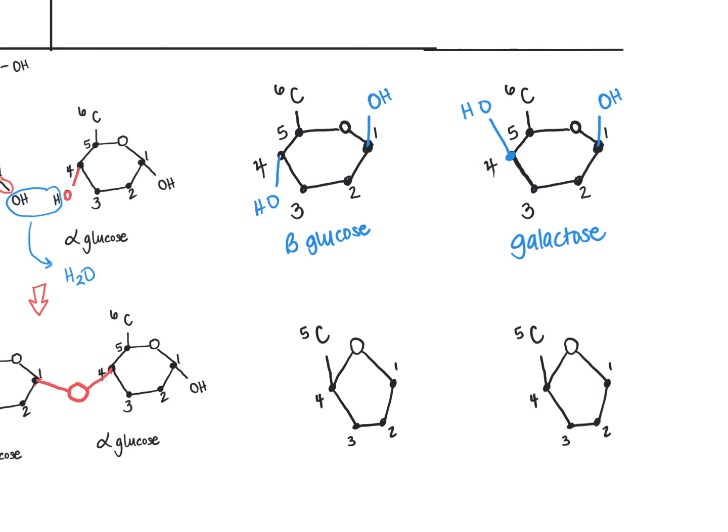If the pentose sugar that you are looking at has the hydroxyl group at carbon number two, like this, then the name of that five carbon sugar is called ribose and it is the sugar of RNA.